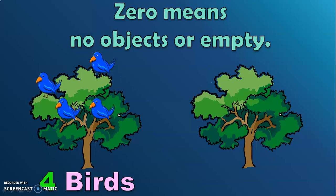But there are no birds in the second tree. We can say that the second tree is empty, or there are no objects in the second tree. Or we can also say that there are zero birds in the second tree.